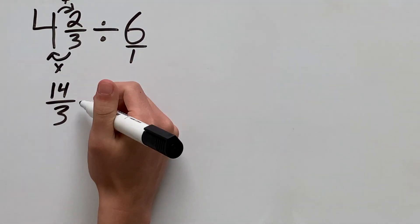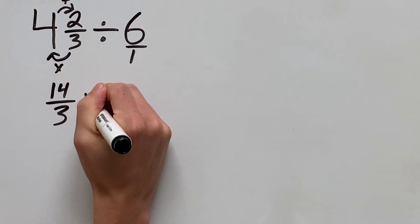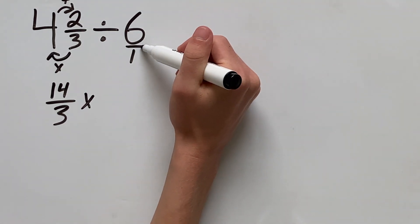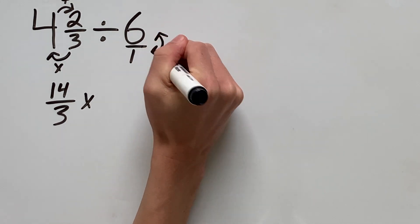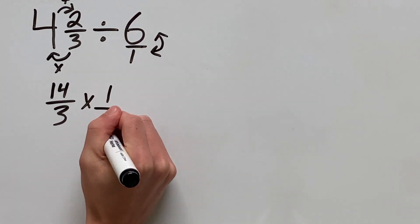Now as we bring this down to our new problem, when we are dividing, we want to change the sign to a multiplication and write the reciprocal of this fraction which is just the flipped version. So instead of 6 over 1, we have 1 over 6.